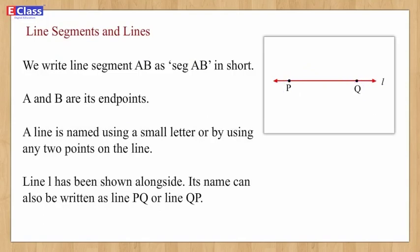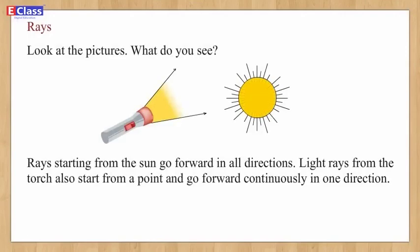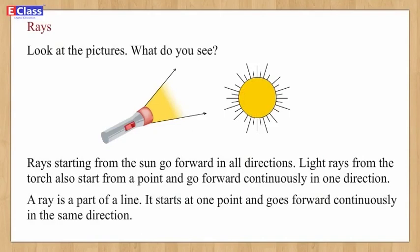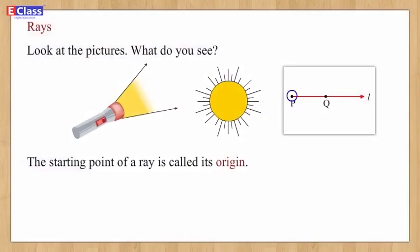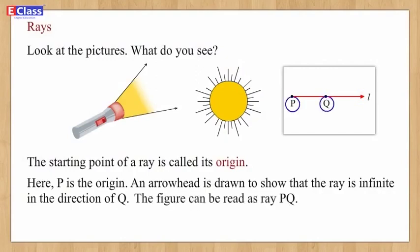Rays: look at the pictures. Rays starting from the sun go forward in all directions. Light rays from a torch also start from a point and go forward continuously in one direction. A ray is a part of a line — it starts at one end and goes forward continuously in the same direction. The starting point of a ray is called its origin. Here, P is the origin. An arrowhead shows that the ray is infinite in the direction of Q. This is read as ray PQ — not ray QP.